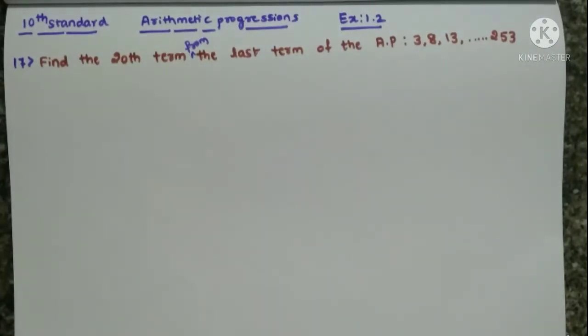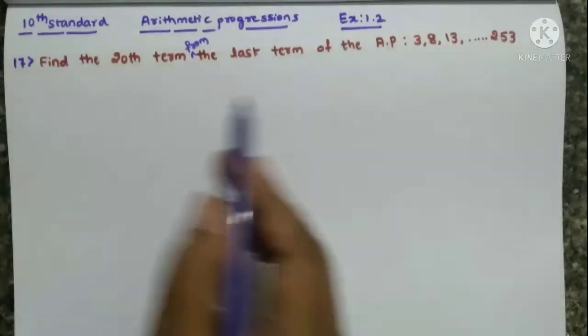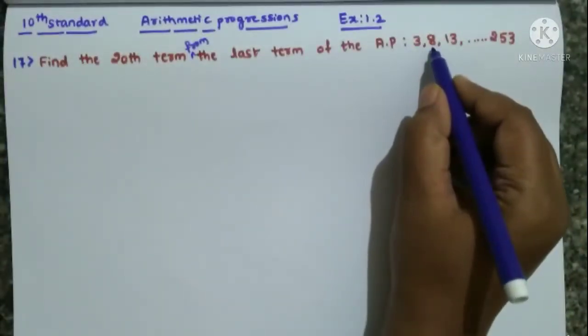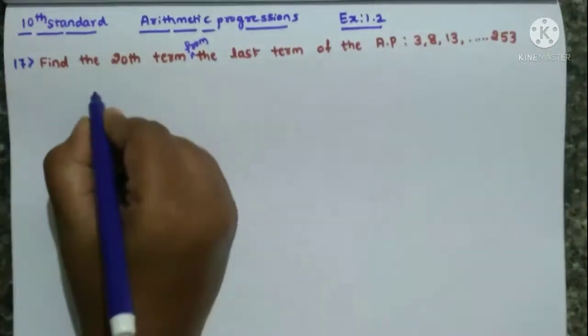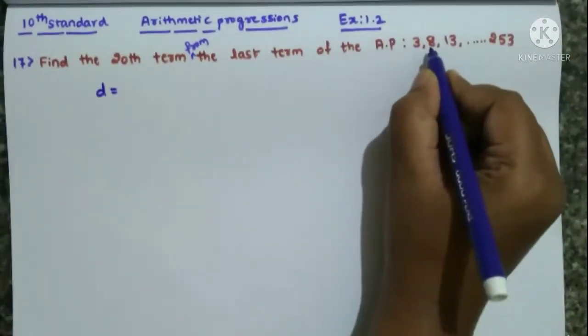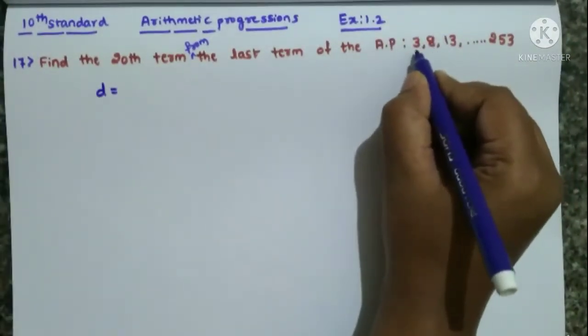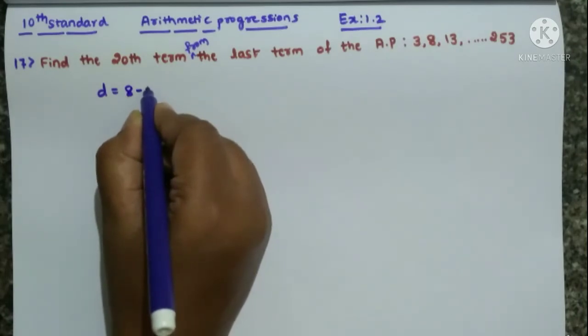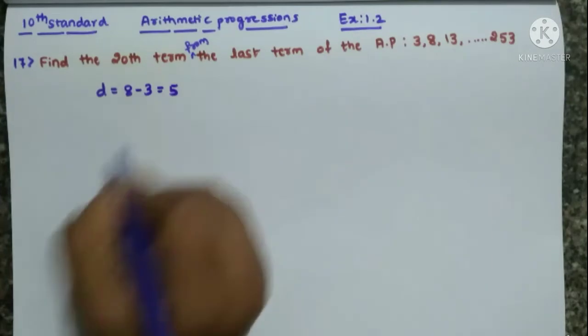For that, first write whatever values they have given here. Find D value. How are you going to find it? The D value will be the same. D is always A2 minus A1. This is second term, this is first term. So 8 minus 3, how much will you get? 8 minus 3 is 5. Here D value is 5.